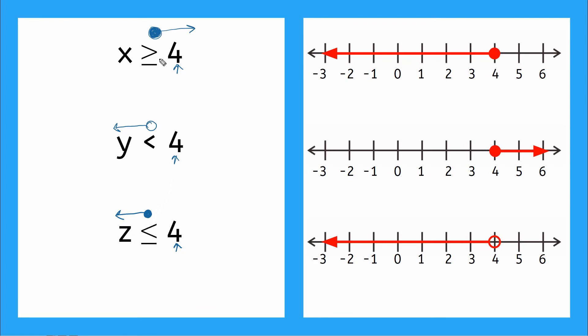Okay. So now we have a rough idea of what our graph should look like for each of these. So for this one, I'm looking for a closed circle at 4 that's going towards the bigger numbers, the greater than. So it looks like this one has a closed circle at 4, but it's going towards the smaller numbers. So that's not right. How about this one? 4, closed circle towards the bigger numbers. Right. So this is the graph for this one.